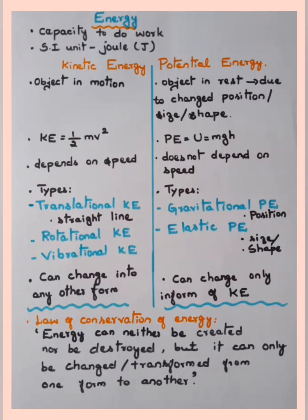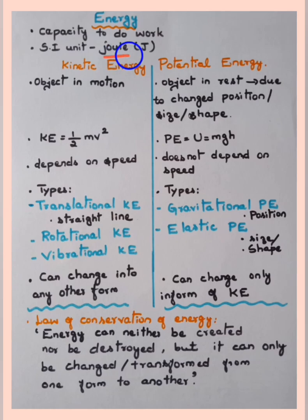Next, we shall move to the concept of energy. Energy is the capacity to do work. The SI unit of energy is the joule, represented by the letter J. There are mainly two types of energy: kinetic energy and potential energy.